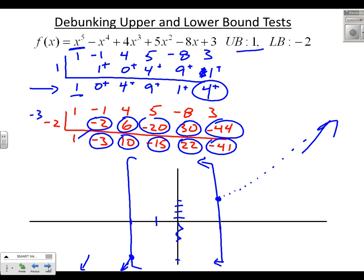So that's a debunking of the upper-lower bound test — hopefully it makes some sense. In the age of graphing calculators, it's not maybe as useful as it used to be, but if you're doing a hand test with a big list of rational zeros, it's very helpful to know you don't have to look at anything to the right of 1 or to the left of negative 2.